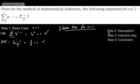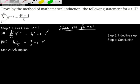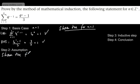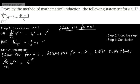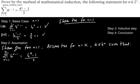Moving on to the assumption. Shown true for n equals 1. We now assume true for n equals k, where k is a positive integer, such that the sum from r equals 1 to k of 4 to the power of r minus 1 is equal to (4 to the power of k minus 1) over 3.